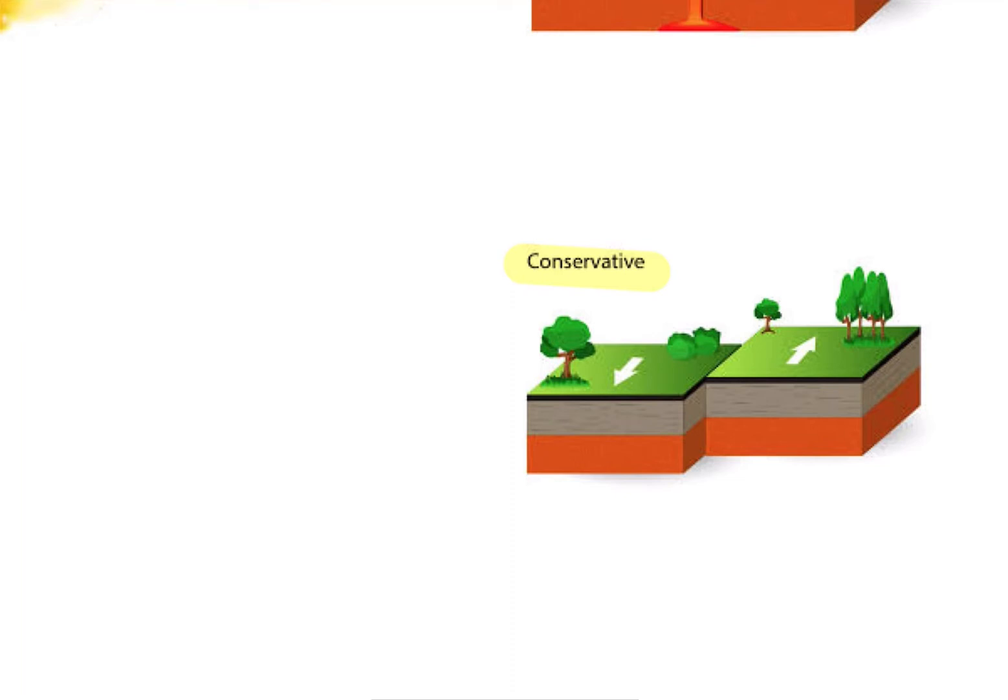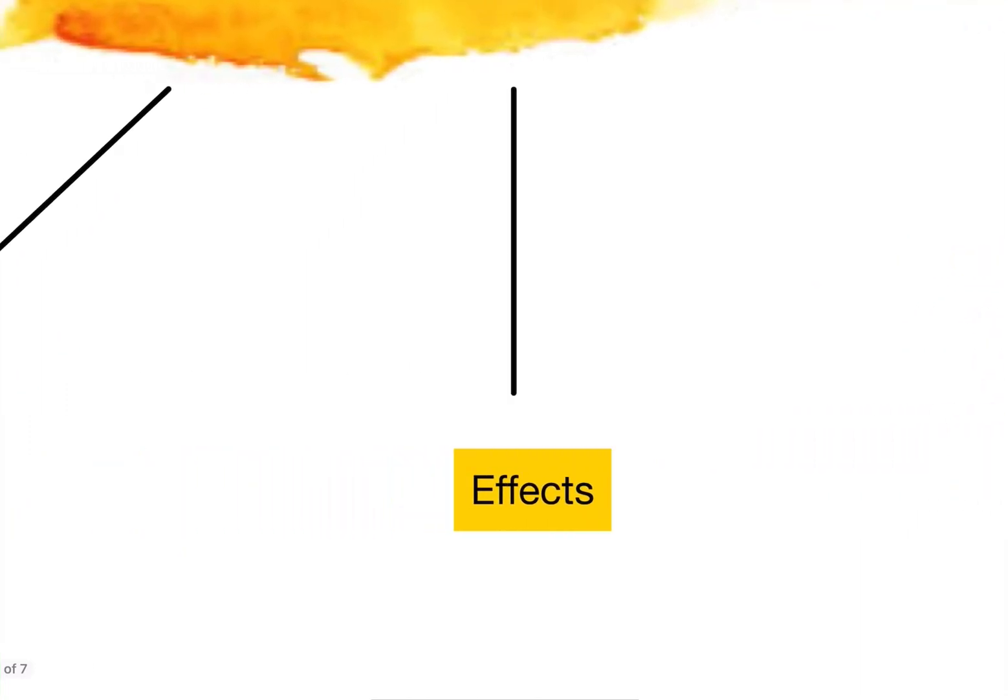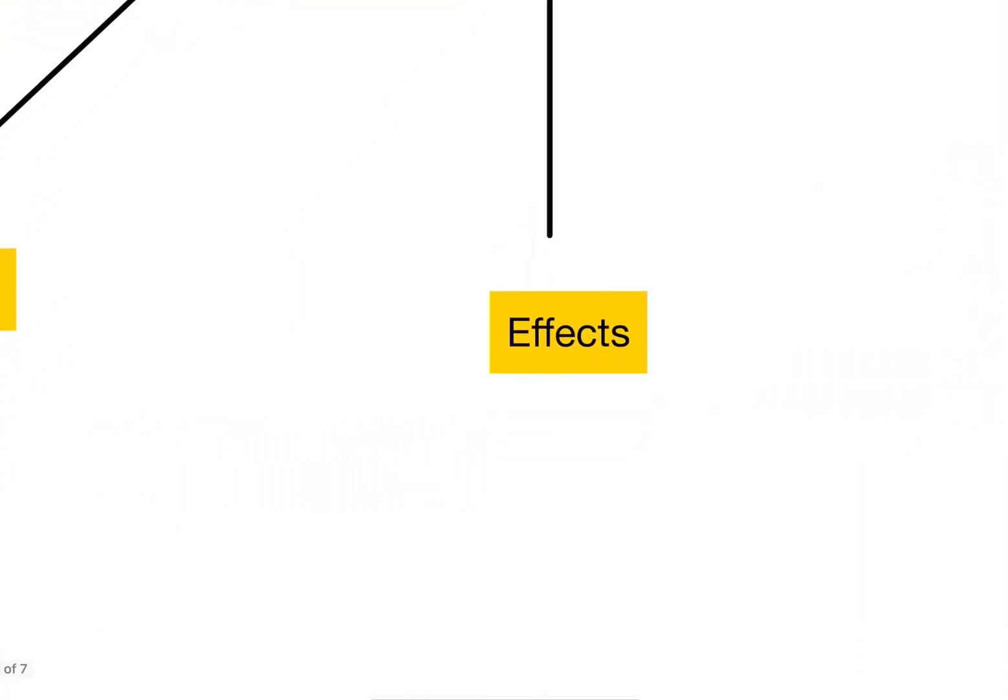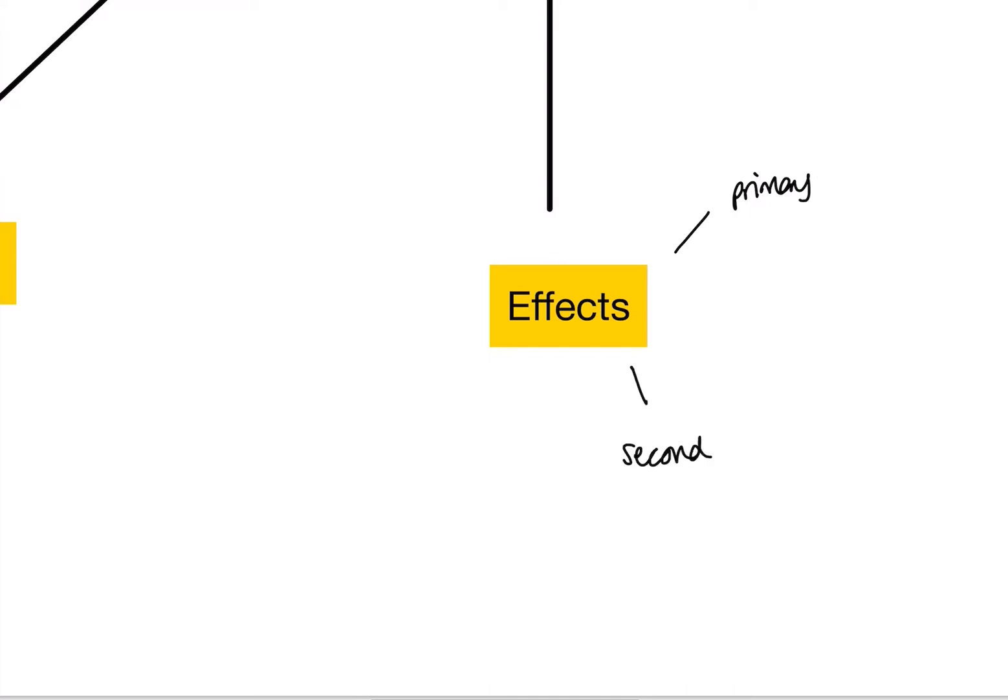With each of these hazards, we get loads of effects from them. When we're thinking about hazards, we like to break down our effects to two categories. Our effects could be primary, or they could be secondary. If we have primary effects, those are immediate things that happen after one of these hazards.